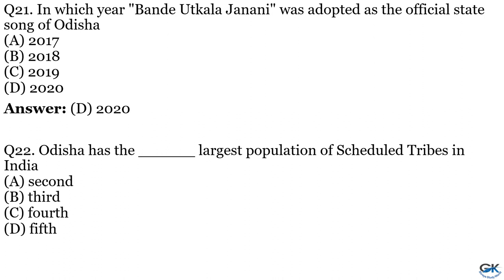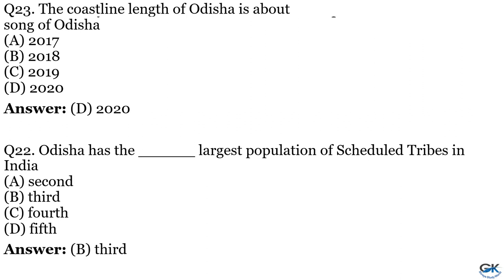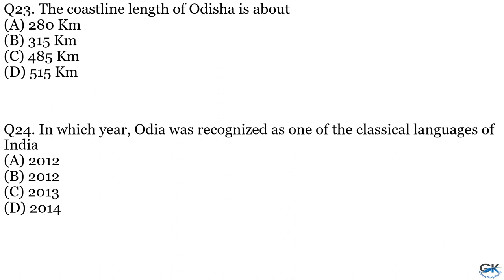Question No. 22: Odisha has the largest population of scheduled tribes in India ranked which position? Option A: 2nd. Option B: 3rd. Option C: 4th. Option D: 5th. The answer is Option B, 3rd. Question No. 23: The coastline length of Odisha is about — Option A: 280 km. Option B: 315 km. Option C: 485 km. Option D: 515 km. The answer is Option C, 485 km.